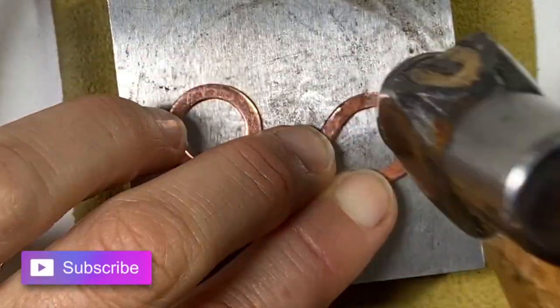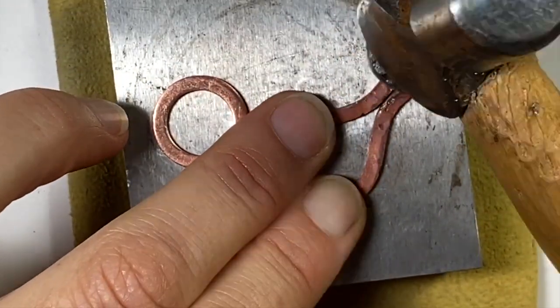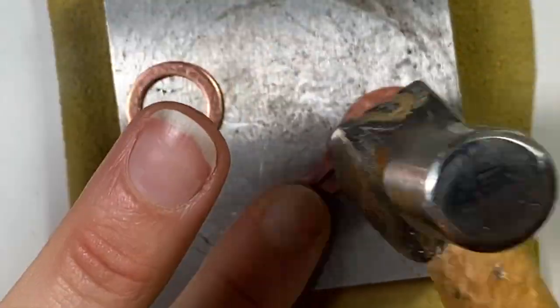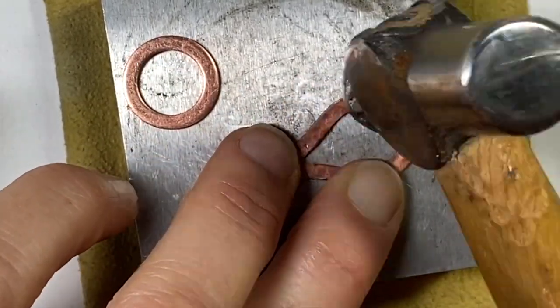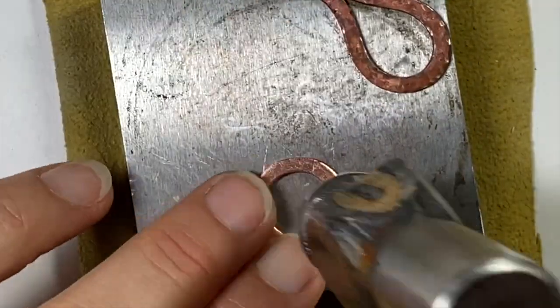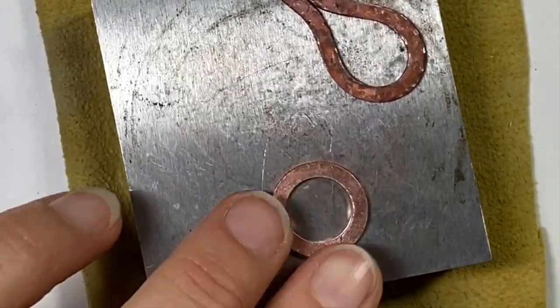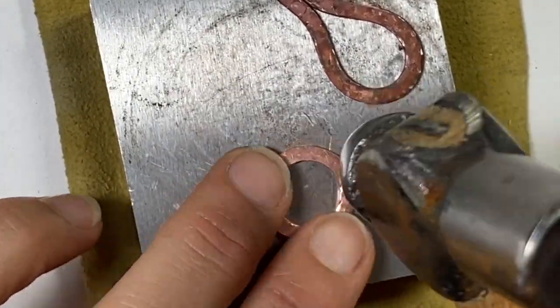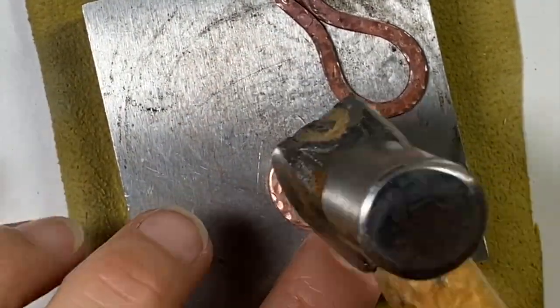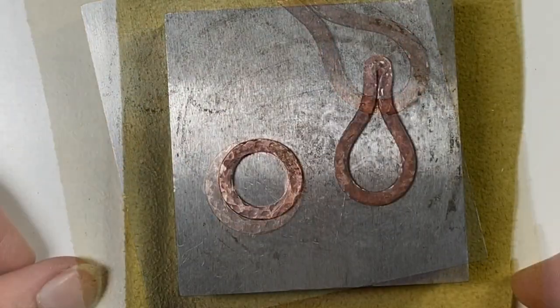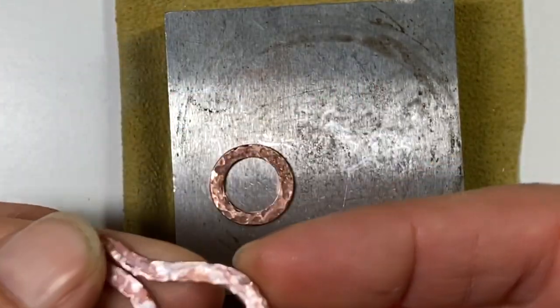All right, got my texturing done. Next I want to bend this over to make the clasp part. I want this side to be on the outside, so I'm going to bend it over this way. It's going to be pretty hard - copper hardens up pretty fast.